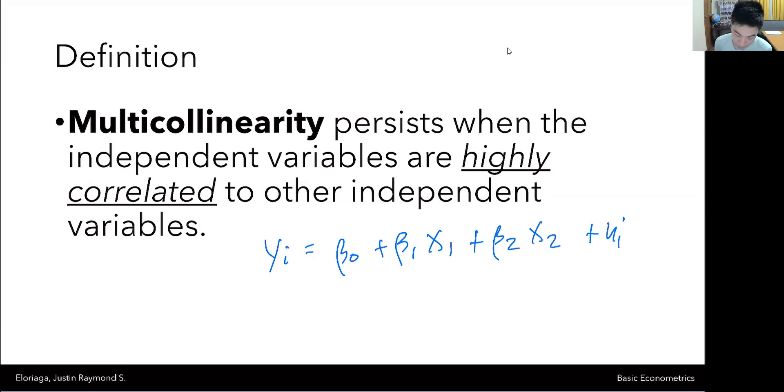And our assumption when we discussed the assumptions of the classical linear regression model was that the expected value of x1 conditional on x2 is equal to zero and the other way around as well. That just means that two different independent variables are not related to each other, because they are independent. So they should be independent, not just with the error term, but also with other independent variables.